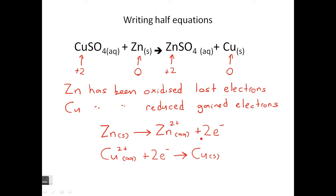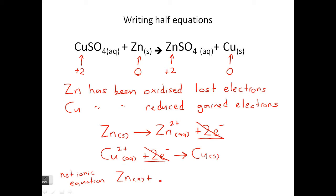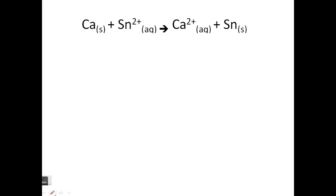If electrons are lost, they're on the right side of the arrow. If they're gained, they're on the left side of the arrow. Now, if something appears on both sides of the equation, we can cancel it out — like that. That leaves us with what we call the net ionic equation. So we've got Zn(s) plus Cu²⁺(aq) on the left, and Zn²⁺(aq) plus Cu(s) on the right. Let's look at another example.